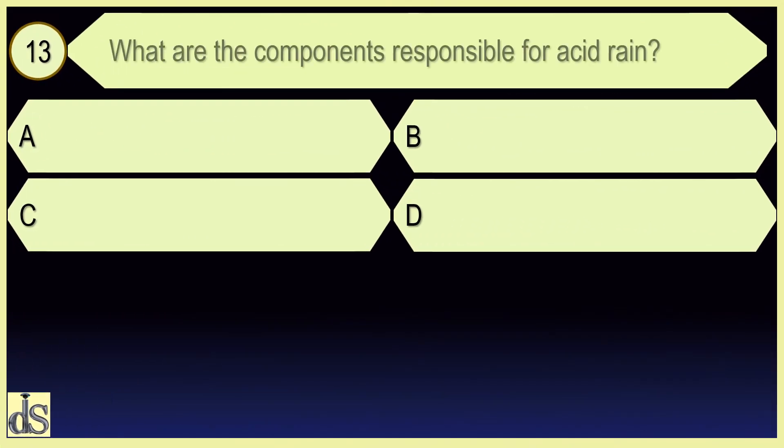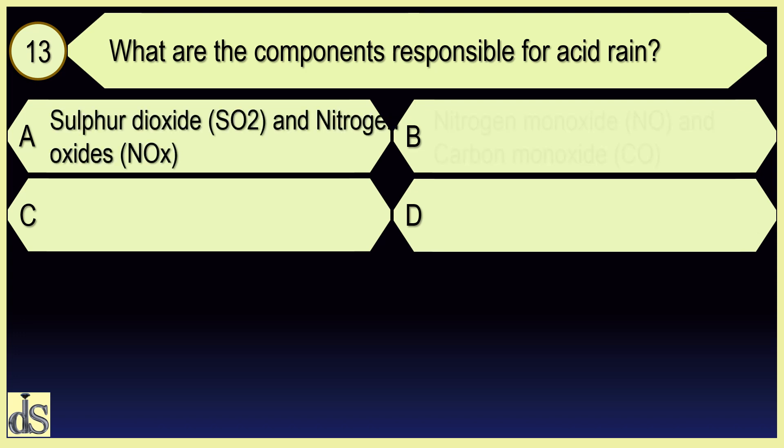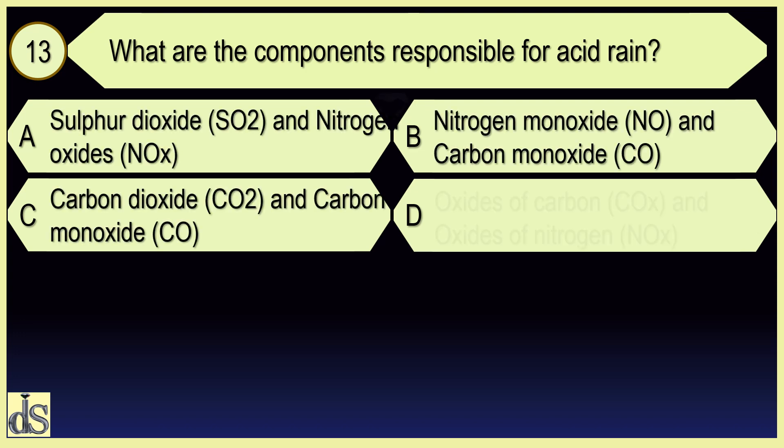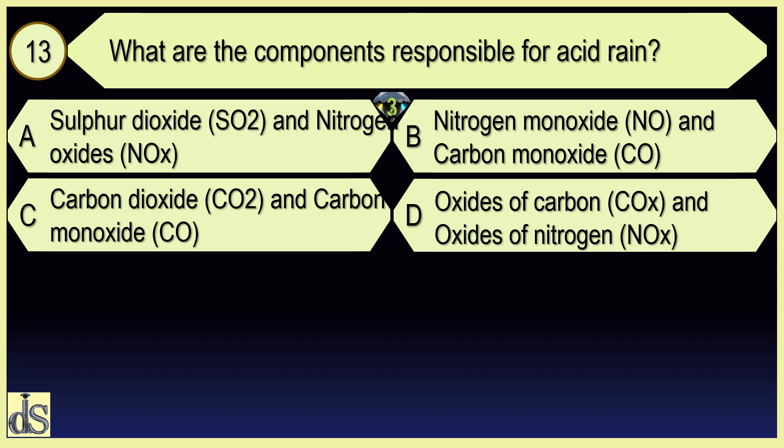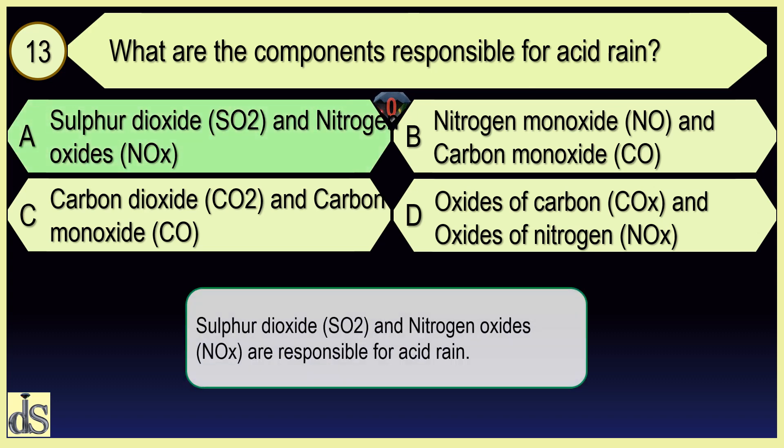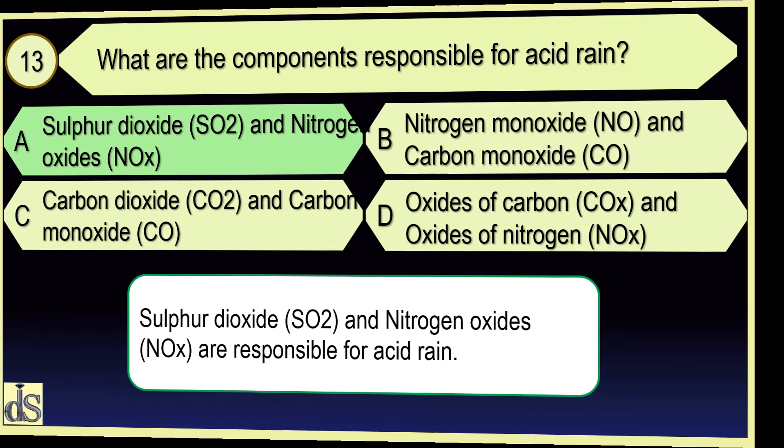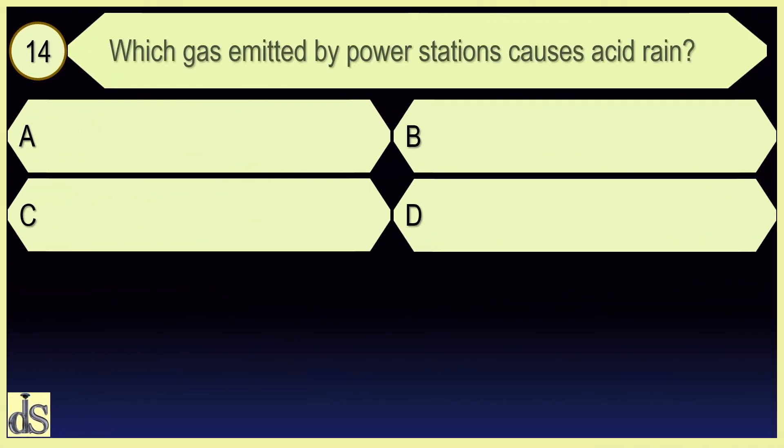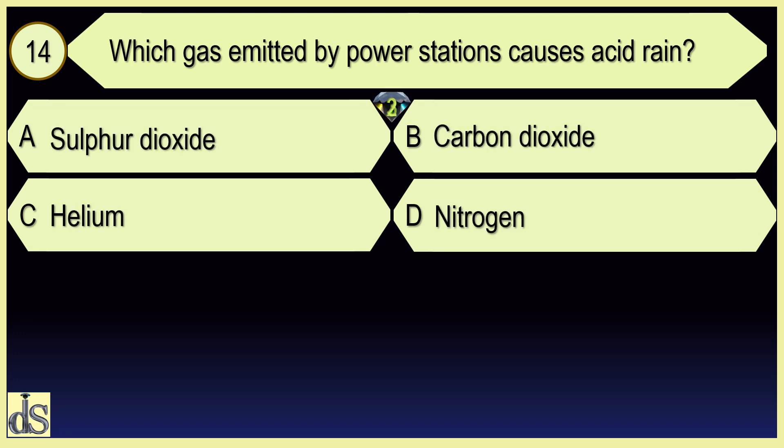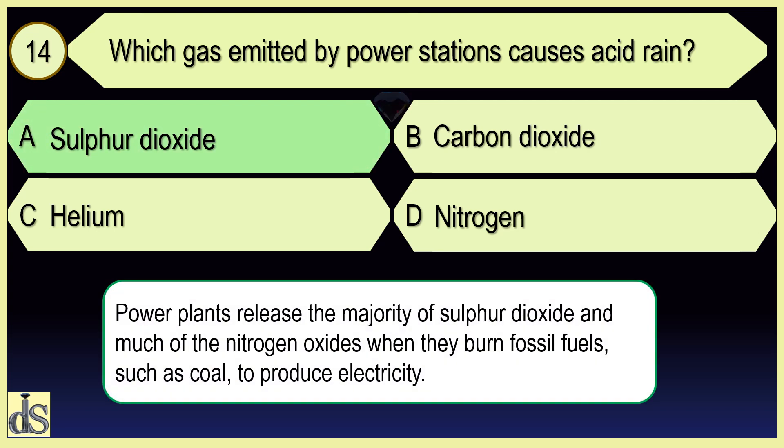What are the components responsible for acid rain? Sulphur dioxide and nitrogen oxides. Which gas emitted by power stations causes acid rain? Sulphur dioxide.